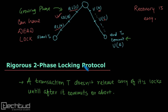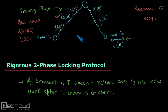In rigorous 2PL we can still have deadlock because locks are not all acquired at once. The two-phase locking protocol that is deadlock-free is conservative 2PL, because in conservative 2PL all data items required during the transaction are locked first before the transaction starts. Since there is no waiting for data items in the future, there is no chance of deadlock. Wherever a growing phase exists, a deadlock situation can occur.